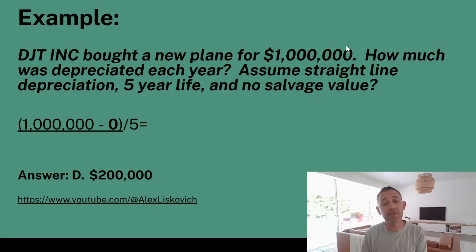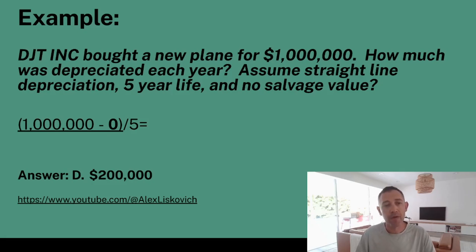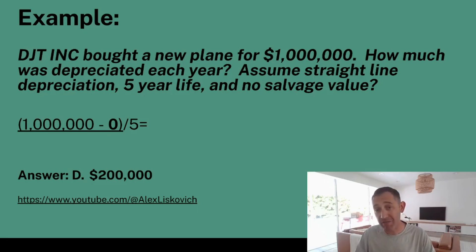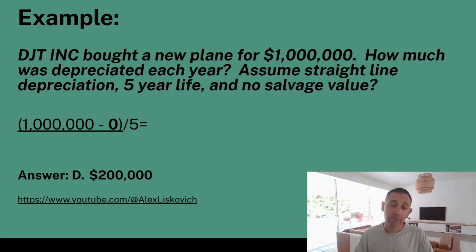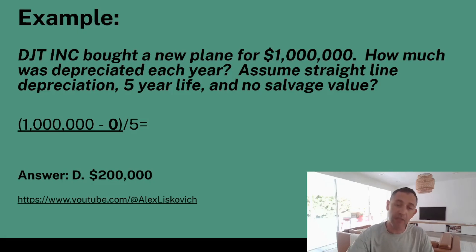The answer is D — $200,000. Using the formula: one million dollars, the value of the plane, minus zero because there's no salvage value, divided by five because there's a five-year life. One million dollars divided by five equals $200,000. Simple. Not much to it. You don't need to be an accountant to do this — it's just very basic math. But let's keep working through different kinds of questions with different wording.